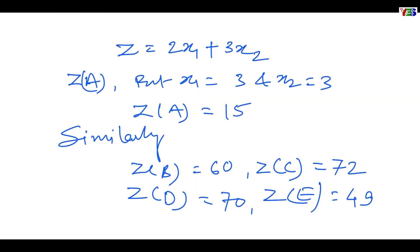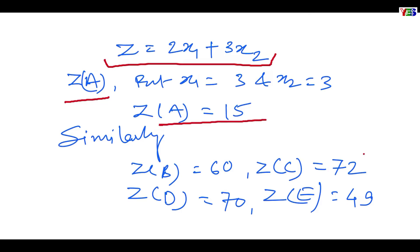Now let us find the value of z for all five points using z equal to 2x1 plus 3x2. For point A (3, 3): zA equal to 15. For point B (12, 12): zB equal to 60. For point C (18, 12): zC equal to 72. For point D (20, 10): zD equal to 70. For point E (20, 3): zE equal to 49. By comparing them, the maximum value is at point C, and it is 72.